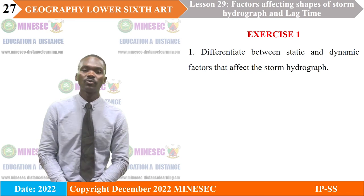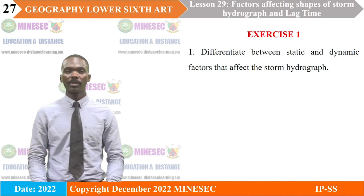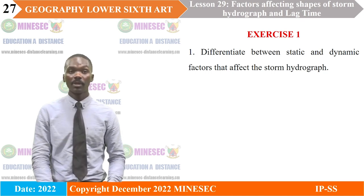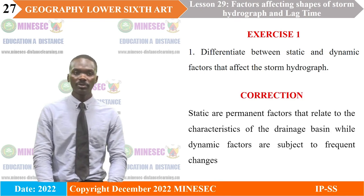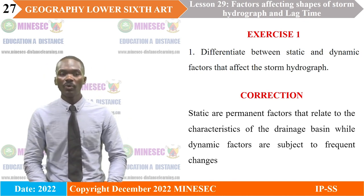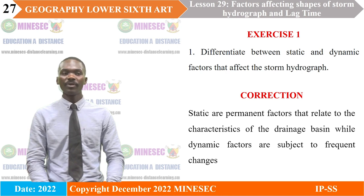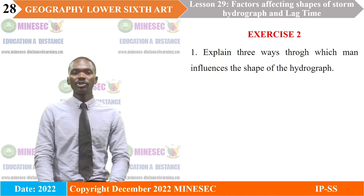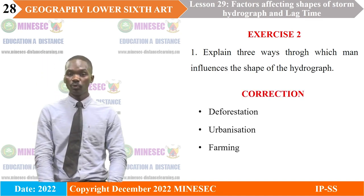Let us take some exercises to see how we have understood our lesson today. Question one: differentiate between static and dynamic factors that affect the storm hydrograph. Correction: static factors are permanent factors that relate to the characteristics of the drainage basin, while dynamic factors are subject to frequent changes. Question two: explain three ways through which man influences the shape of the hydrograph. Correction: through deforestation, urbanization, and farming.